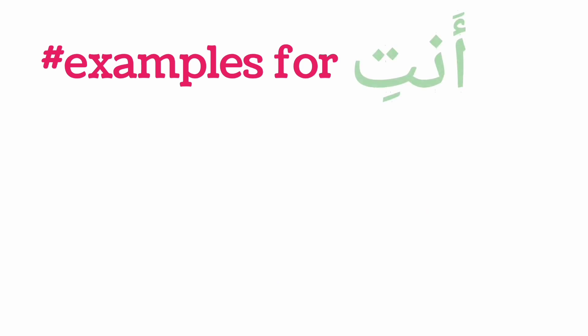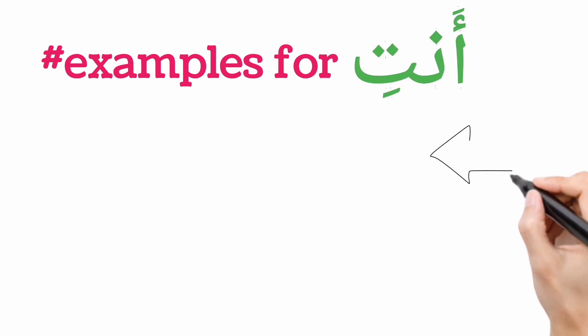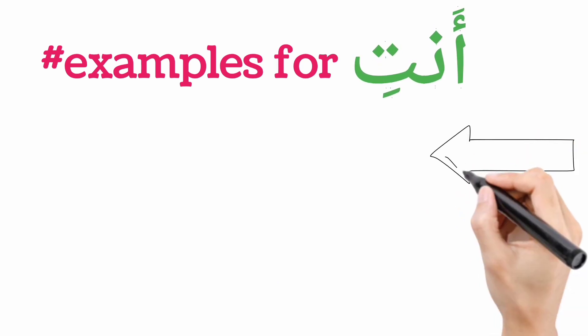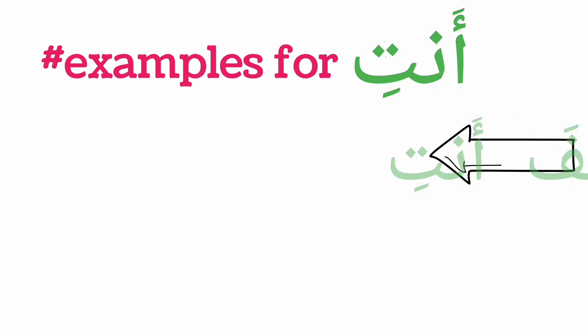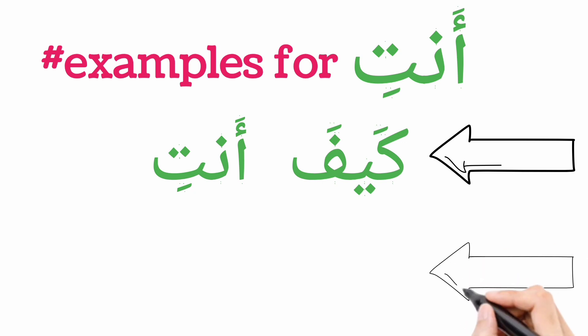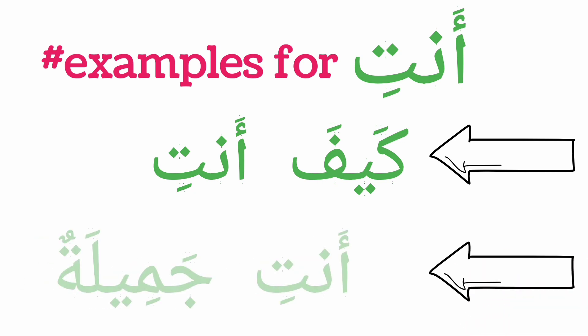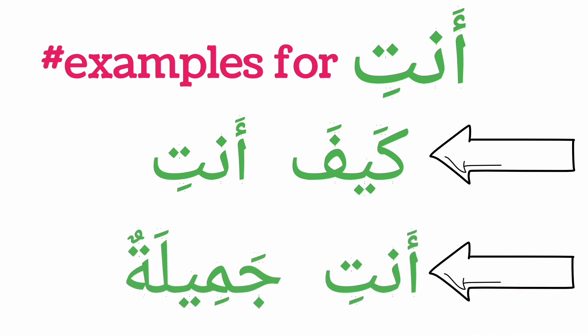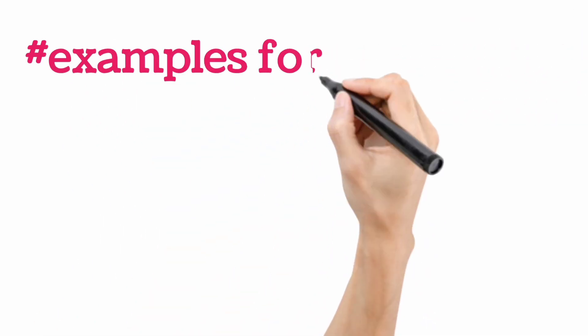Now, examples for anti and how you use it: you say something like 'keifa anti,' meaning 'how are you?' By using anti, it is understood that you are referring to a lady in front of you. You can also say 'anti jamilatun,' meaning 'you are beautiful,' addressed to a female in front of you.